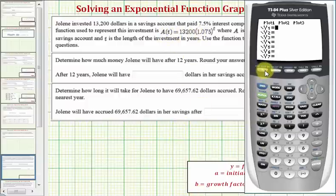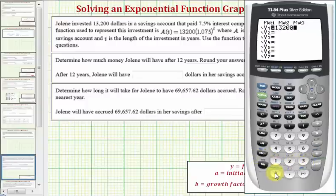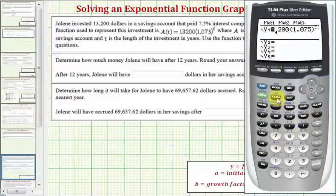So we'll press Y equals. If there are any old functions, we should clear them, and now we'll enter the new function, though we'll use x instead of t. So we have 13,200 times 1.075, close parenthesis, raised to the power of x.